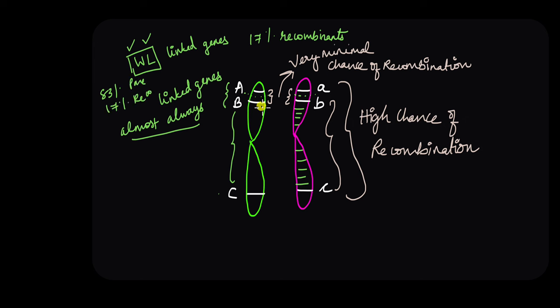Using this concept, one of Morgan's students was able to map the location of several genes on human chromosomes, which led to the innovative Human Genome Project — about which we'll learn in another video.